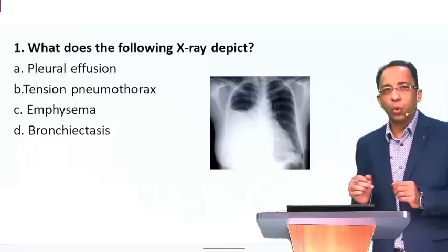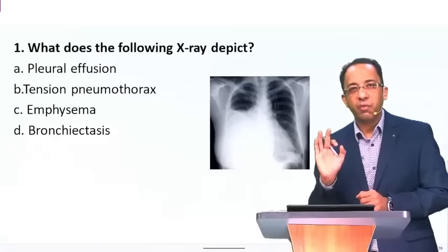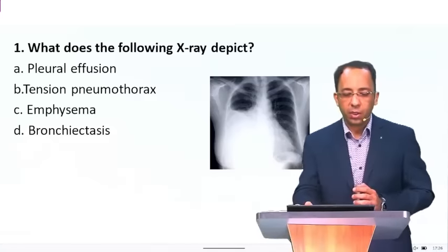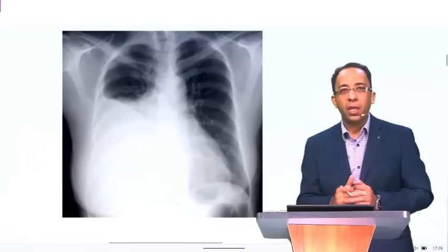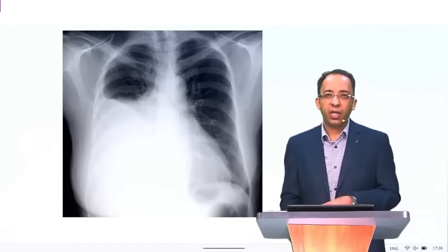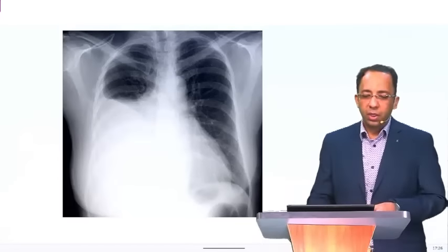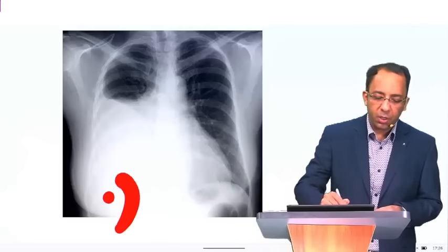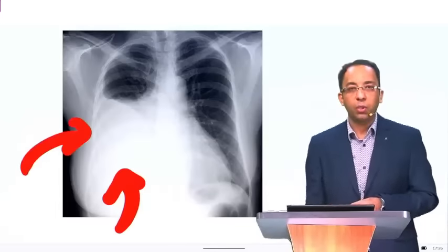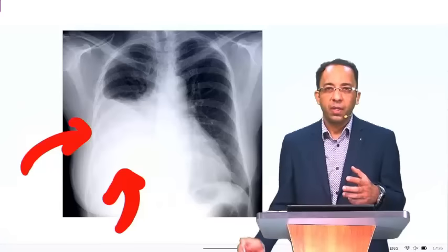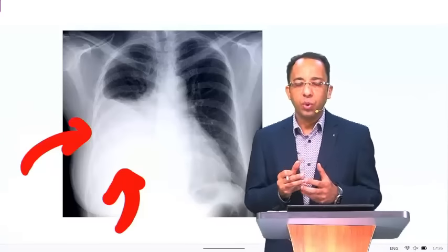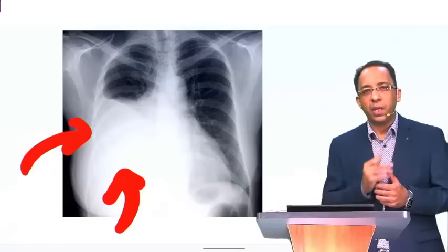What does the X-ray shown to you depict? This is a previous FMG question — we asked the same question in our mock test. I want you to look at the X-ray in front of you. What is the striking finding for you? The striking finding is you can see opacity in the right lower zone. In chest X-ray, the terms we use are lucency and opacity.